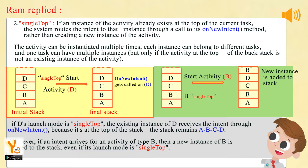2. Single Top — if an instance of the activity already exists at the top of the current task, the system routes the intent to that instance through a call to its onNewIntent method, rather than creating a new instance. The activity can be instantiated multiple times, each instance can belong to different tasks, and one task can have multiple instances, but only if the activity at the top of the backstack is not an existing instance of the activity. If D's launch mode is single top, the existing instance of D receives the intent through onNewIntent because it's at the top of the stack; the stack remains A, B, C, D. However, if an intent arrives for an activity of type B, then a new instance of B is added to the stack, even if its launch mode is single top.